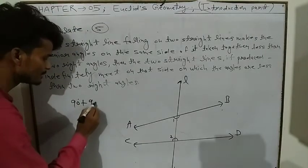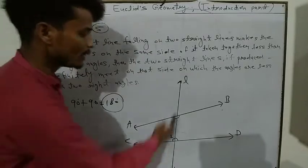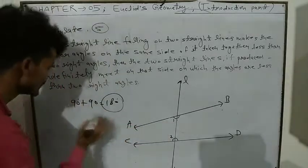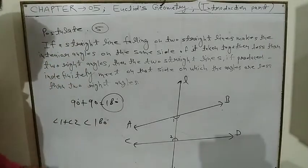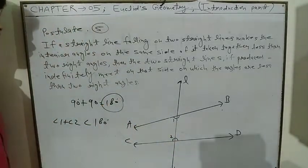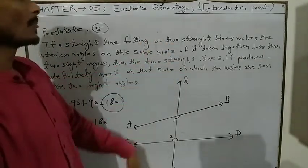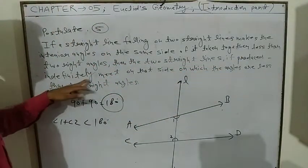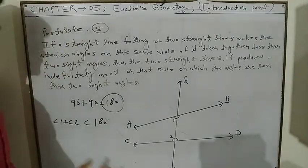Two right angles means 90 plus 90, which is 180 degrees. If you have two straight lines and one side has interior angles whose sum is less than 180 degrees, then the two straight lines if produced indefinitely will meet on that side where the angles are less than 180 degrees.